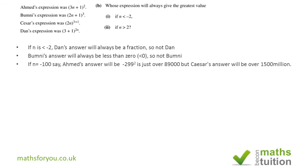Suppose n=−100: Ahmed is going to give us a figure of about 89,000 or so, while Cesar's result will be about one and a half thousand million. So Cesar is the answer for Section B part i.